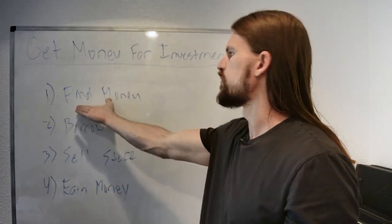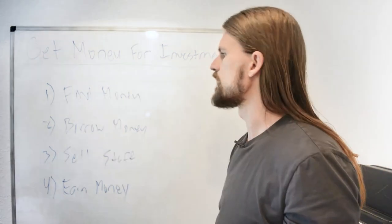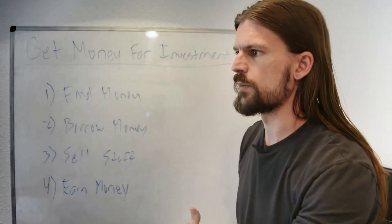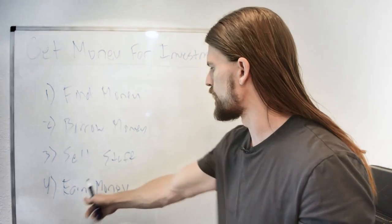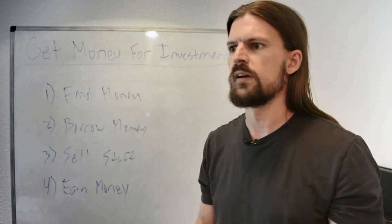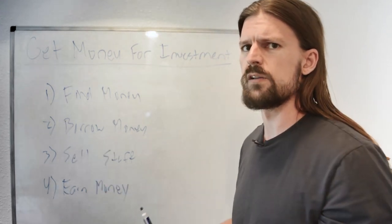So let's go through each of these with some specifics. You find money like you find money that you already have that you might have forgotten about. Borrow money means that you get money from somebody else and pay them back later. Sell stuff, obviously sell anything that you have that's valuable. Earn money is find a way to get paid new money aside from whatever your full-time job is or whatever your regular income is.